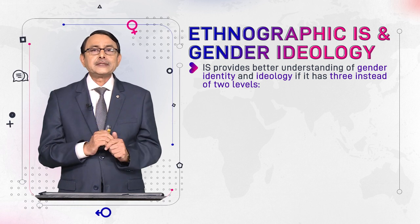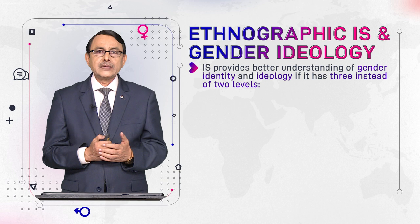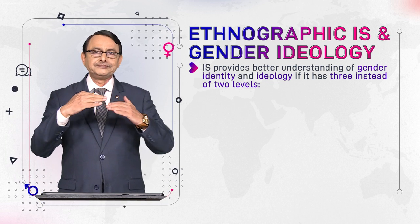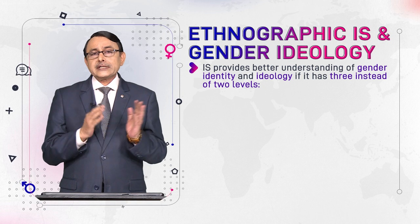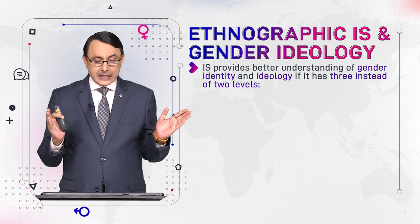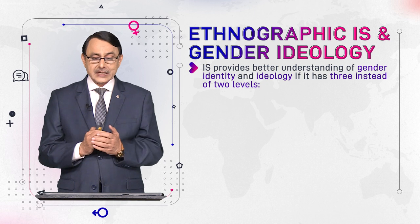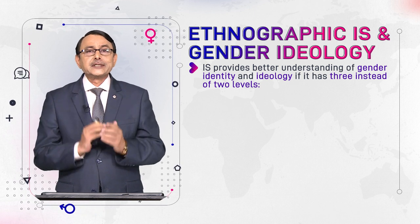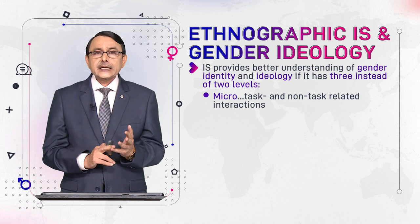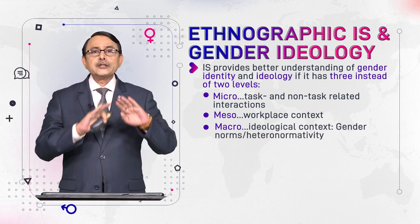The first level is the micro level — that is the interaction, where individuals are talking with each other. The second is the meso level, the intermediate or middle level. The third level is the macro level, which is the societal level. So: first is micro level — interaction; second is meso level — workplace context; third is macro level — ideological, societal context.